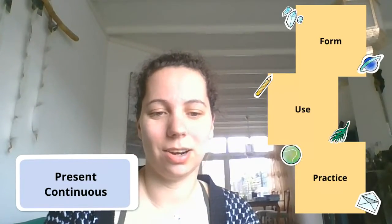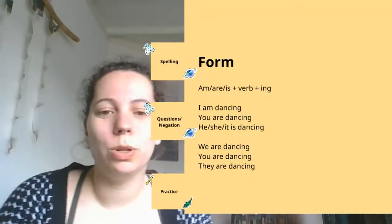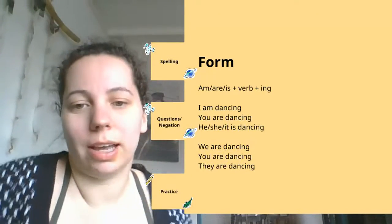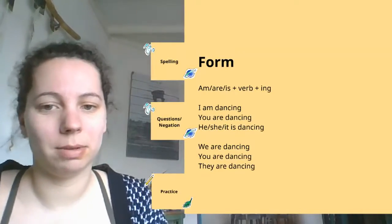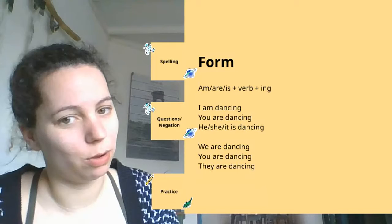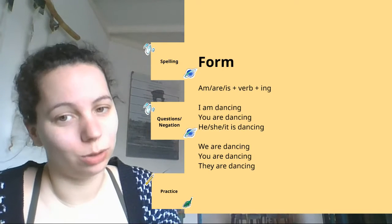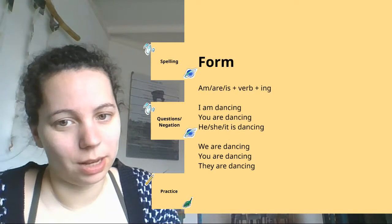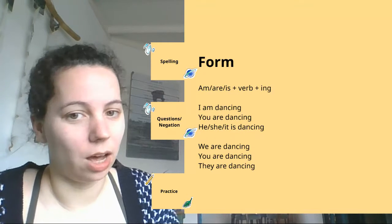Okay, let's start on the form. So what does a present continuous look like? Well, a present continuous is always with the present form of 'to be' — so am, are, or is — then a verb, and behind the verb it would have -ing.